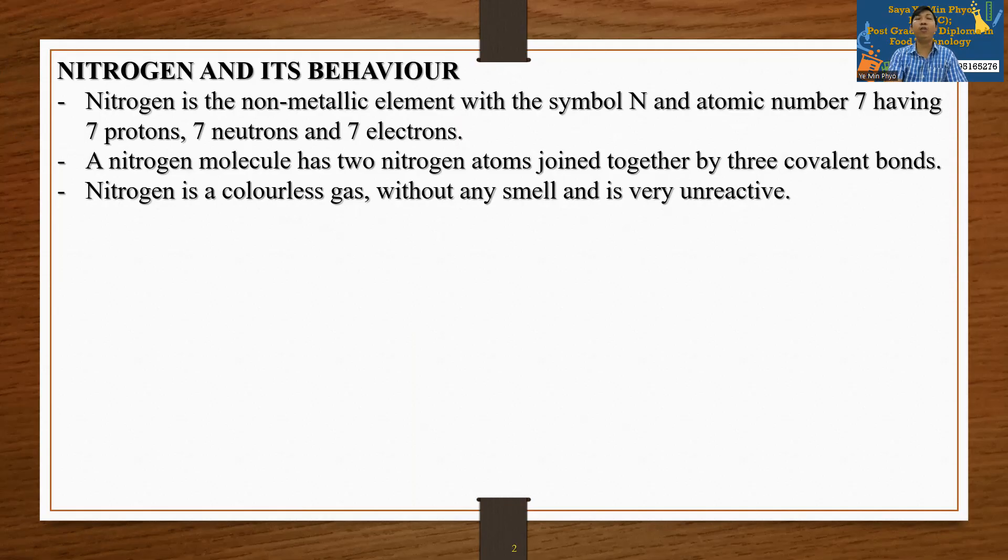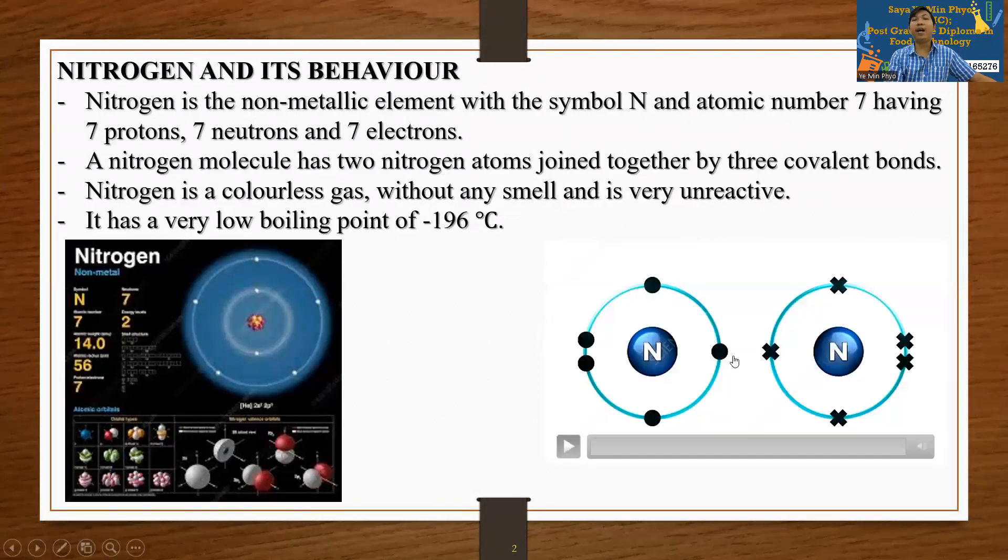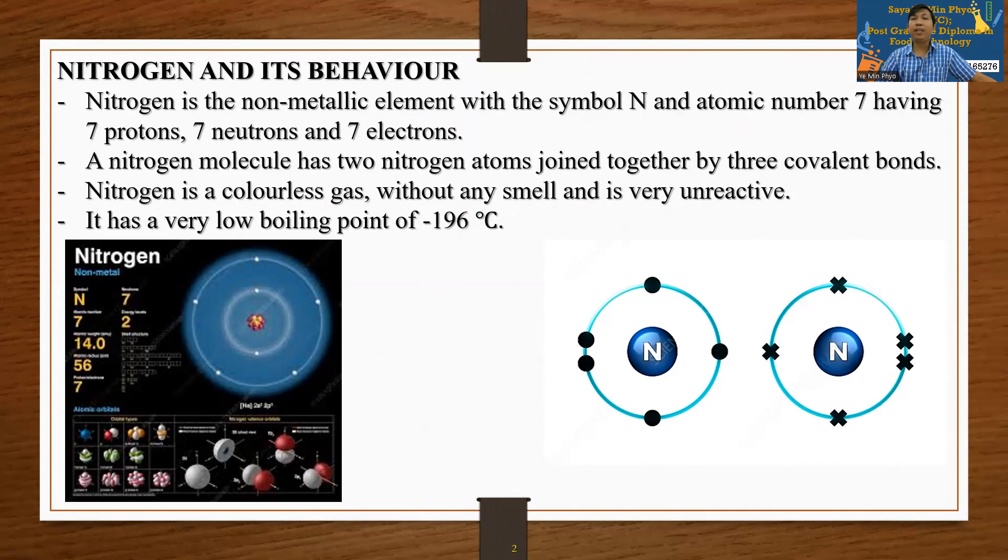Nitrogen has a very low boiling point of minus 196 degrees Celsius. Nitrogen atomic number is 7.